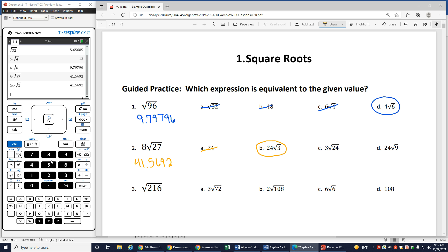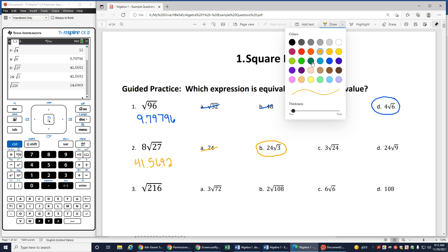Okay, let's look at this number 3, square root of 216. When I do that, I get, let me choose a different color for the third one, I get 14.6969, let's see which one of these matches.